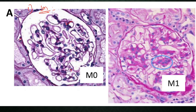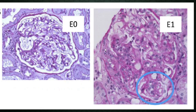Looking at the MEST-C score images: here is M0 because there is no mesangial hypercellularity; M1 shows mesangial matrix expansion along with cellular expansion. Next, endocapillary hypercellularity — you can see inflammatory cells inside the capillary lumen, giving a score of E1 versus E0.